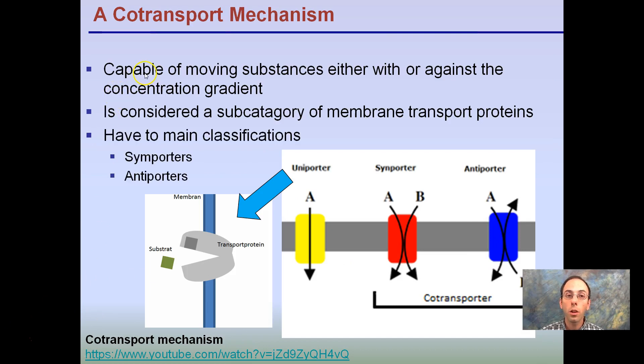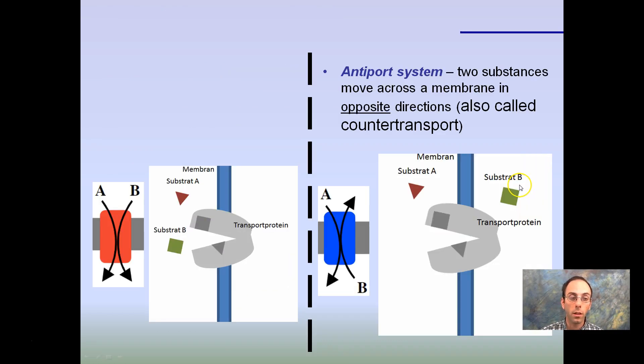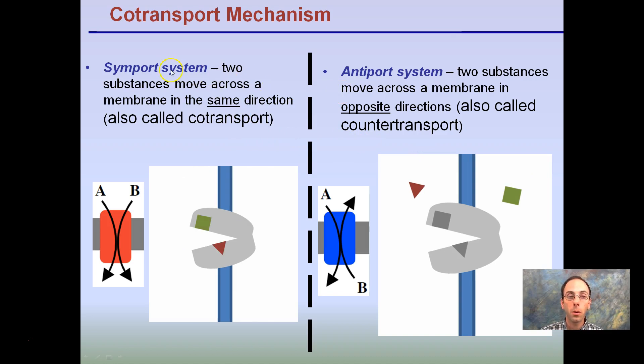The co-transport mechanism here, capable of moving substances either with or against their concentration gradients. Key two terms here are simporters and antiporters. So uniporter, one porter, just moving one thing in one direction. That's what's going on here. Binding here is being released and pushed to the other side. Our co-transports are a little different. We classify them in two ways. So example here. We have our simporter. Two substances move across the membrane in the same direction. Sim means same. Same co-transport. A and B on this side of the cell membrane are being moved to the other side.